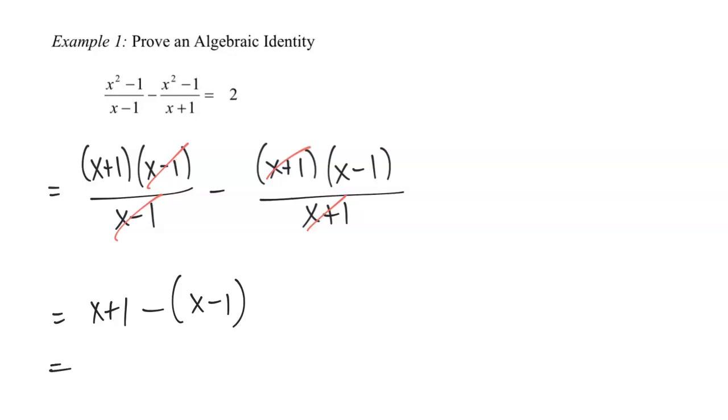Now this is going to equal x plus one minus parentheses x minus one. Distributing that negative to that parentheses is going to give me x plus one minus x plus one. That means I'm going to end up with two after collecting the like terms, which means the x's are going to cancel since one is positive and one's negative, and then positive one and positive one is going to give me two. I factored the numerators, I canceled with the denominators, and then I just collected the like terms, which ended up giving me the right hand side.